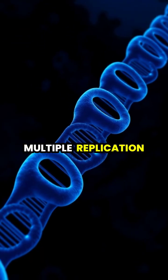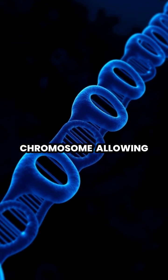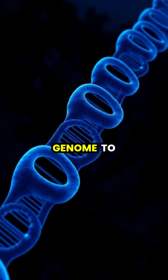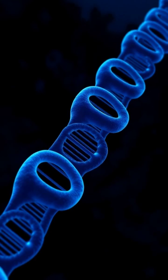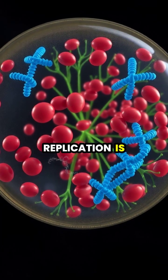Multiple replication bubbles form along the chromosome, allowing the entire genome to be copied efficiently before the cell divides.